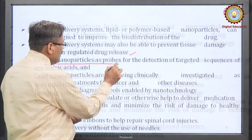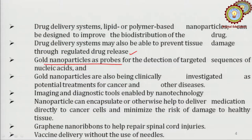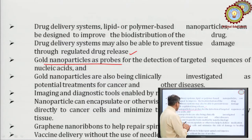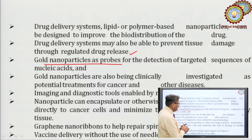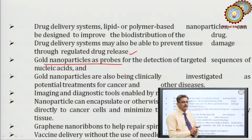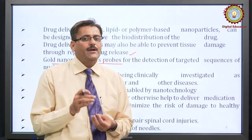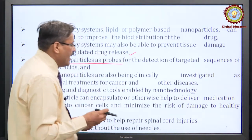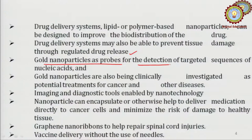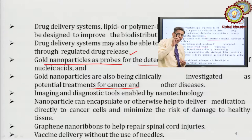Gold nanoparticles are used as probes for the detection of targeted sequences of nucleic acid, and are also being clinically investigated as potential treatments for cancer and other diseases. Nanoparticles produced from gold metal can serve as devices for detection of targeted sequences and can also be used at the target point of diseases like cancer.